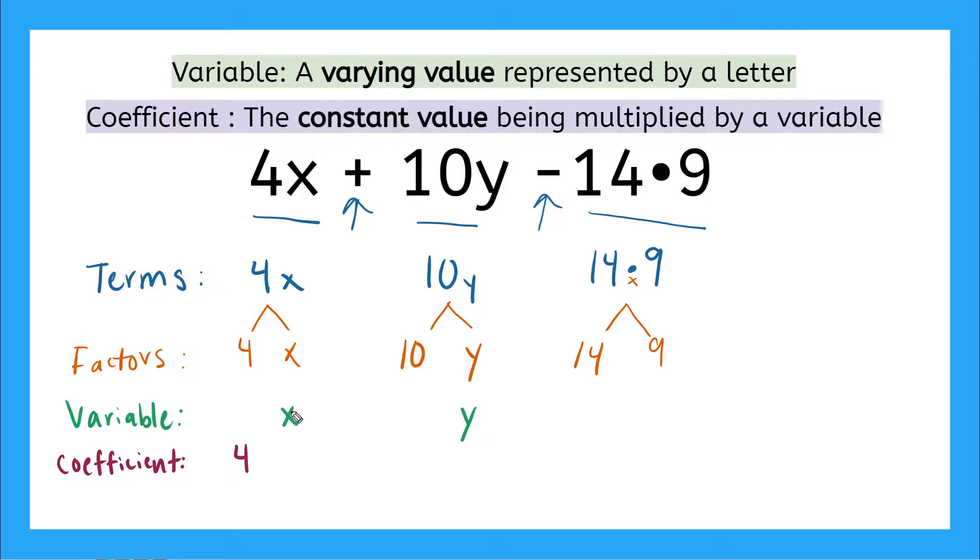So we know that this 4 is a coefficient because it's a factor being multiplied by a variable. Now are there any coefficients or constant values being multiplied by a variable in our second term? Are either of our factors 10 or y a coefficient? Yeah, 10 is a coefficient. And how do we know? Because it's being multiplied by y and we know that y is a variable.